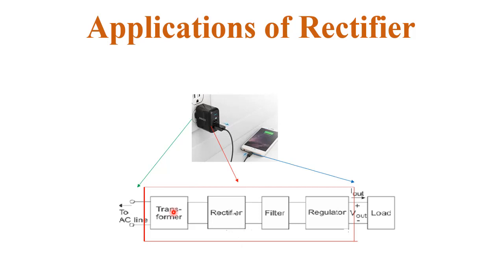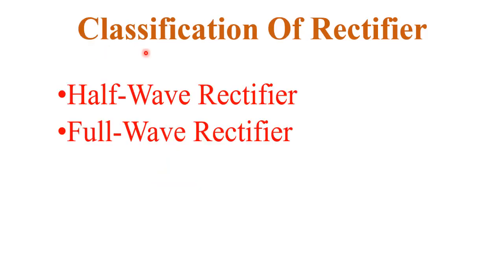The AC mains supply is 220V 50Hz, which is too high, so a step-down transformer is used to reduce the AC supply. This reduced low AC signal is given to the rectifier. The rectifier converts the AC into pulsating DC output voltage. The pulsating DC is given to the filter circuit, which reduces the ripple of the rectifier output. The output of the filter is given to the regulator, which rejects any remaining AC ripple not removed by the filter. The output of the regulator is pure regulated DC, which is given to the load or battery to get charged. This is the most practical and frequently used example of a rectifier.